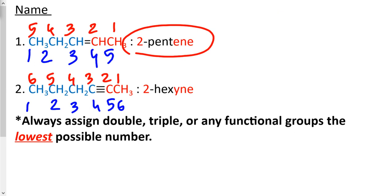For the next one, we have six carbons in total, so the prefix is 'hex'. We have a triple bond, so the suffix is -yne, giving hexyne. Counting from left to right, the triple bond is between the second and third carbon, so the name is 2-hexyne. Counting from right to left, the triple bond is between the fourth and fifth carbon, giving 4-hexyne. Between 2-hexyne and 4-hexyne, we go with the lowest possible number. The correct answer is 2-hexyne. The rule is: always assign double bonds, triple bonds, or any functional groups the lowest possible number.